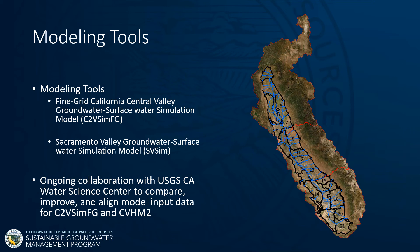The department also maintains several groundwater surface water modeling tools: the California Central Valley Groundwater Surface Water Simulation Model that my team maintains, as well as the Sacramento Valley surface water groundwater simulation model SVSim. We also partner with the USGS California Water Science Center to work closely with their Central Valley model CVHM2 and help align and compare the input data between those models to make it most useful for the public.